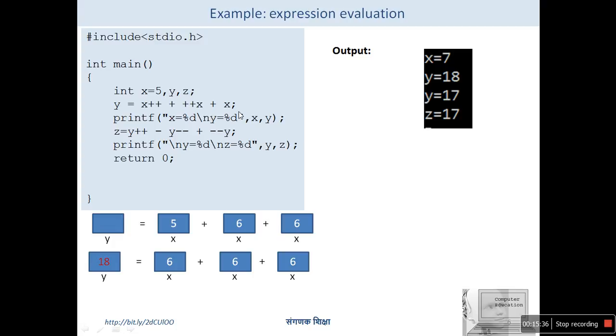The value of y would be 18. When you print x, it would be 7 because x was incremented twice in this statement — once by post-increment and once by pre-increment — and after the semicolon both are applied. So x = 7 and y = 18.